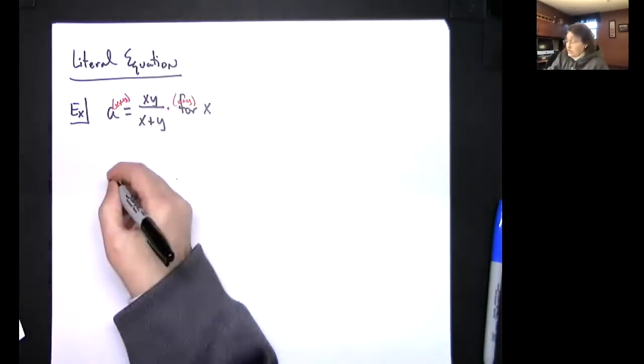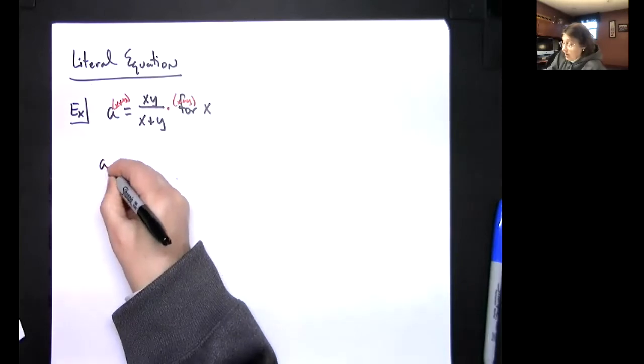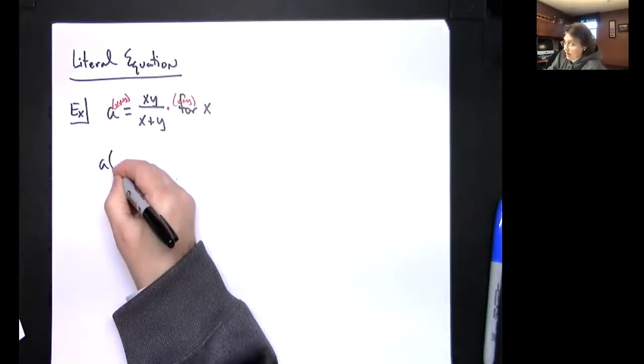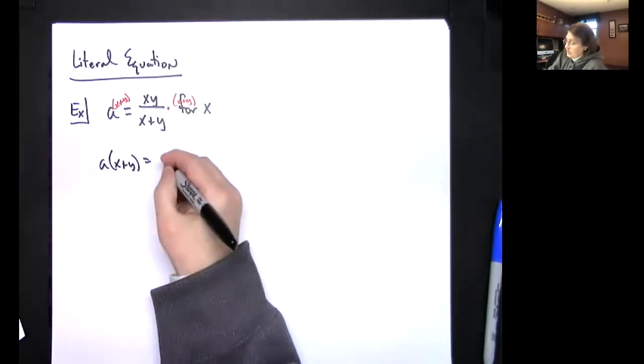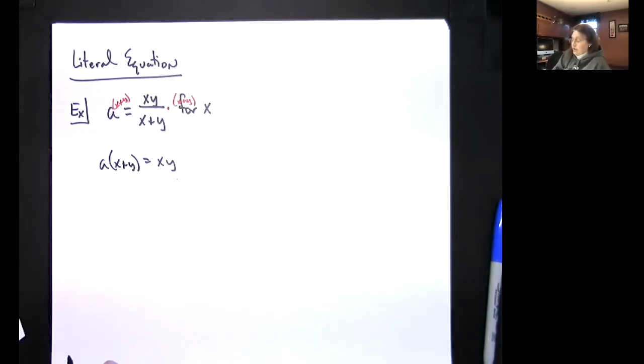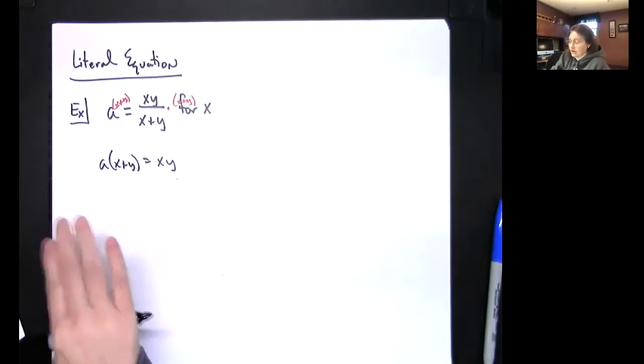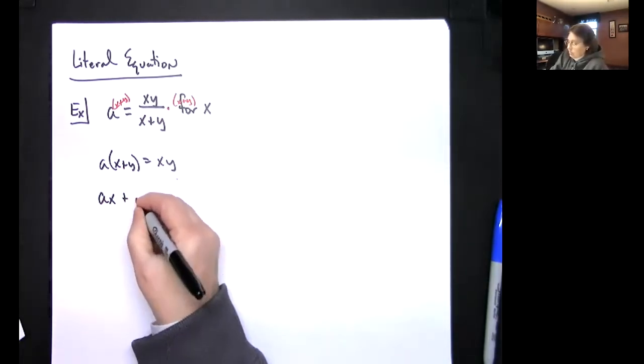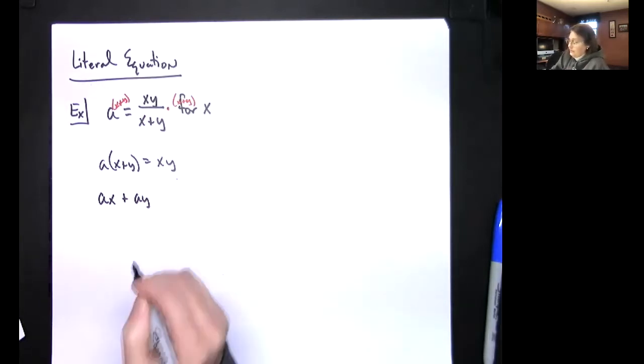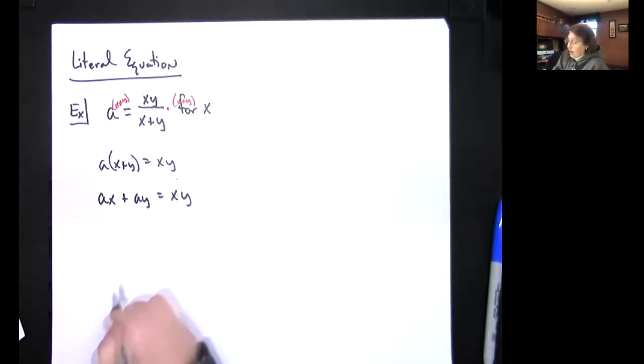In which case then I'm going to have x plus y over here equals this, and this will cross out. I'll have xy. Now since this is kind of inside here, I am going to go ahead and distribute now. So I get ax plus ay equals xy.